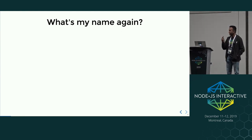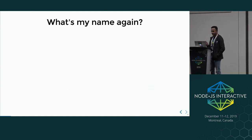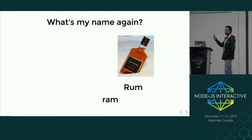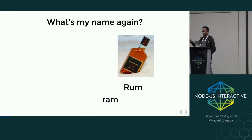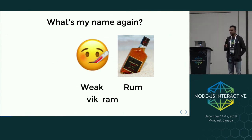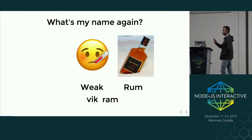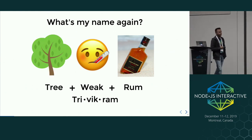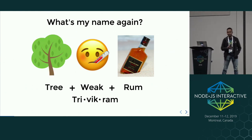I'll give a clue for my name. We are in Canada and it is very cold. Think of the drink rum — a weak rum, not a strong rum — and add a tree in front of it. That's my name.